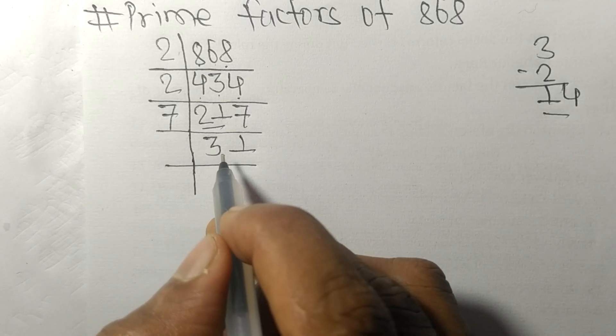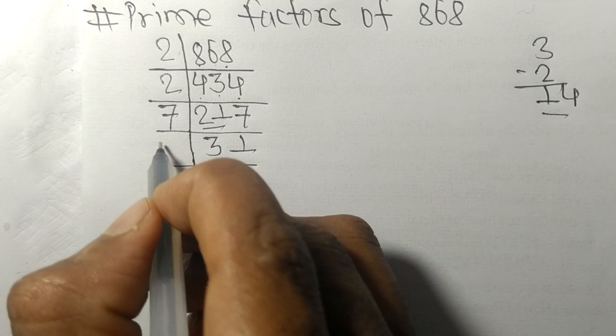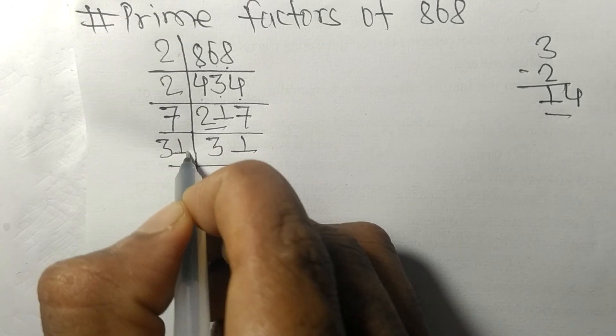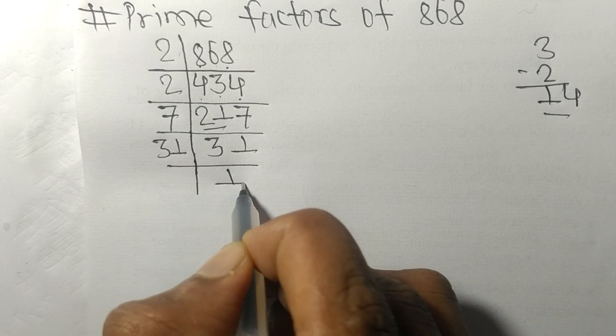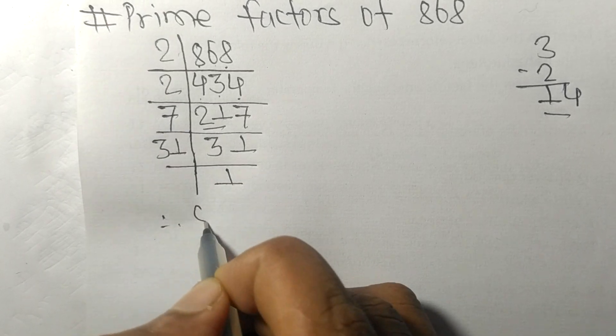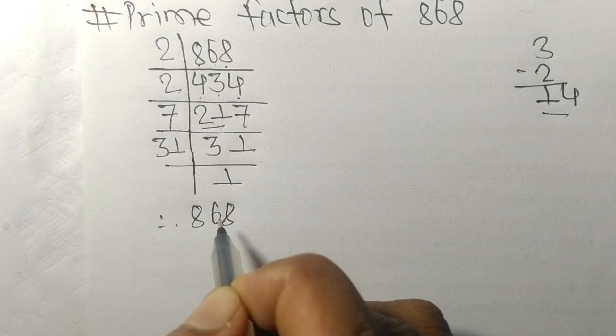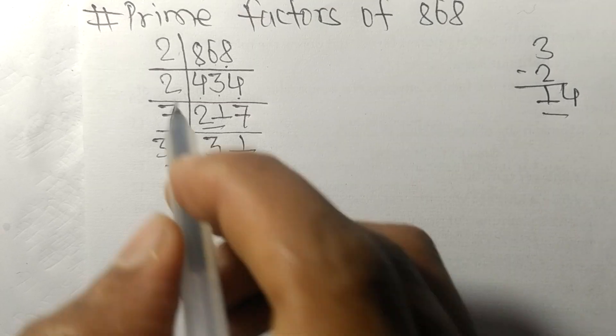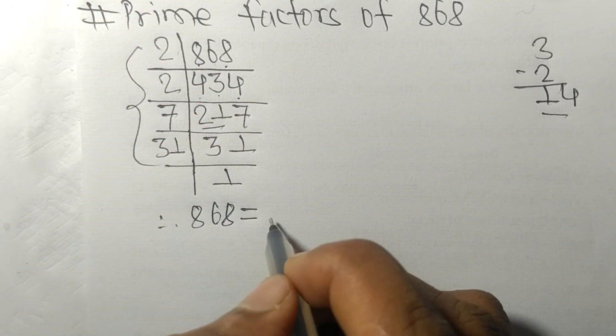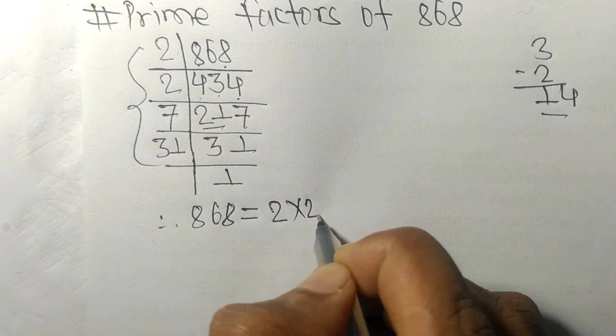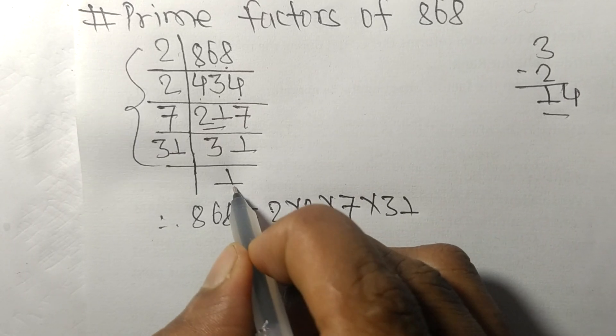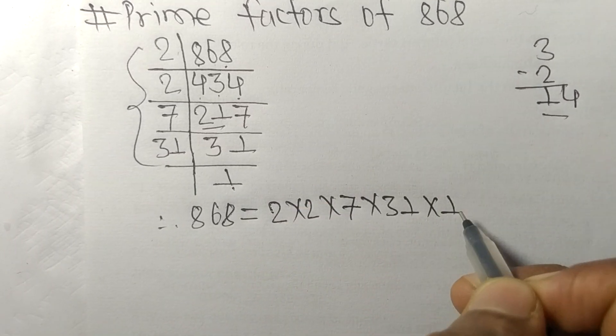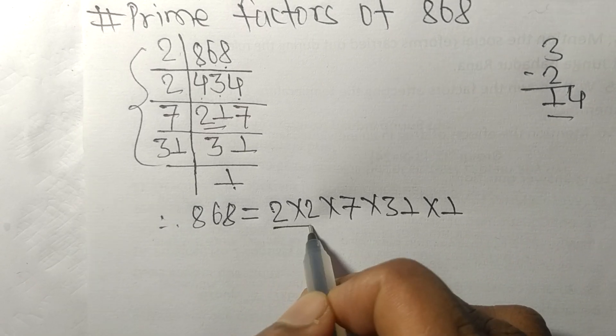So it is exactly divisible by 31 only, and on dividing we get 1. Therefore 868 is equal to, from this side, it is 2 times 2 times 7 times 31. From here it is 1, so these 2, 7, 31.